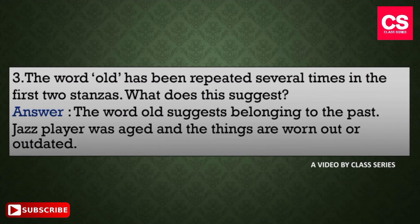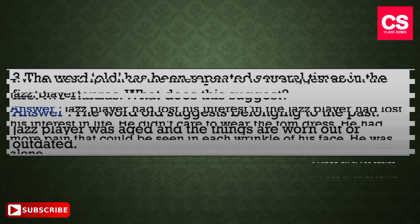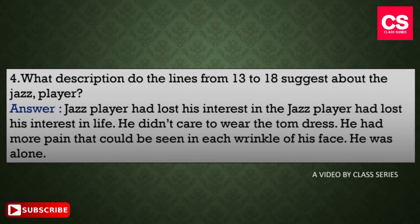Our third question is: the word 'old' has been repeated several times in the first two stanzas — what does this suggest? The answer: the word 'old' suggests belonging to the past. The jazz player was aged and the things around him were worn out or outdated.